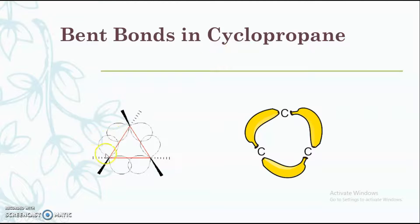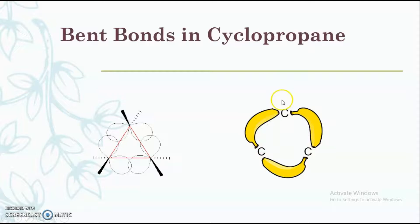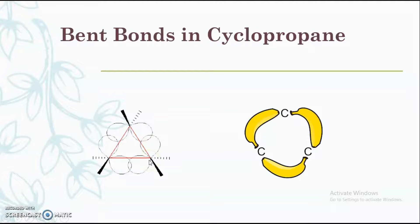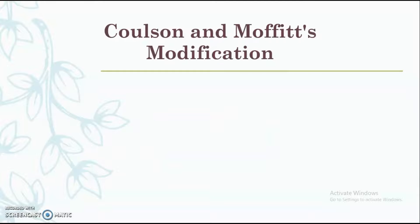Due to the bending of the p orbitals towards the carbon atoms, the type of bond that is formed is known as the bent bond, or a banana-like structure is formed — that is why bent bonds are also known as banana bonds. Cyclopropane and cyclobutane have a greater amount of this particular bent bond, and due to this the structure is known as cyclopropane with the banana bond.